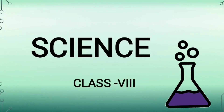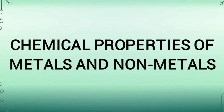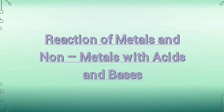Assalamu alaikum students. Welcome to science class. Hope you all are good and safe at your home. Today we will continue chapter 4 of your science book, Materials, Metals and Non-metals. In this video we will continue chemical properties of metals and non-metals. In the previous video I told you about the reaction of metals and non-metals with oxygen and water. In this video we will see how metals and non-metals react with acids and bases.